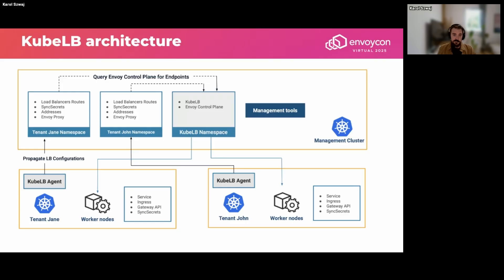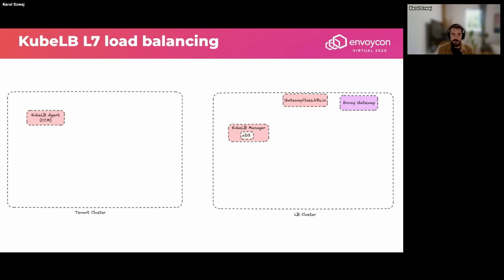KubeLB consists of a KubeLB agent, which is basically a CCM, and a KubeLB manager that sits in the management cluster and orchestrates everything. In the management cluster you deploy the KubeLB manager, which comes with its own separate Envoy control plane. In tenant clusters you install the agent CCM, which watches for specific resources and synchronizes between the tenant cluster and management cluster. The management cluster sets up its own isolated namespace with the resources it manages.